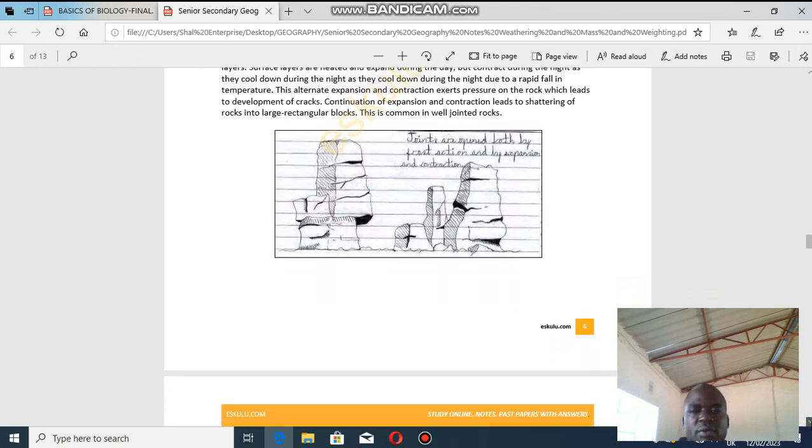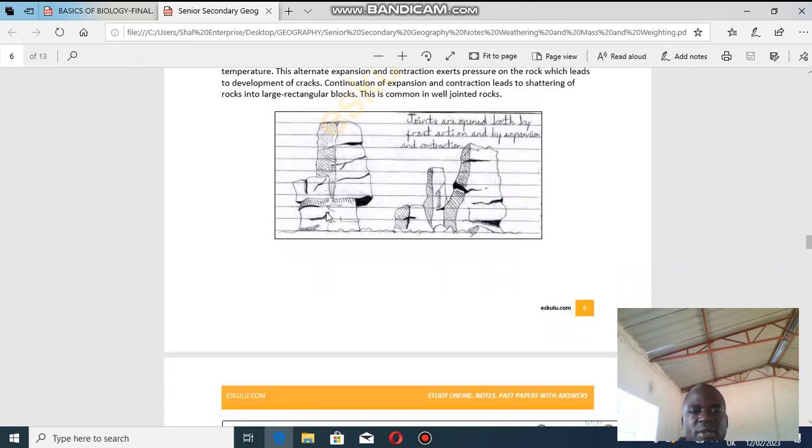This is water contraction and expansion. This is more like the rock as it's shifted. So joints are moved both by frost action and by expansion and contraction.